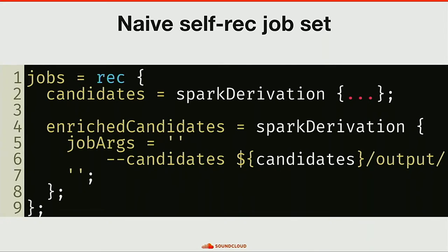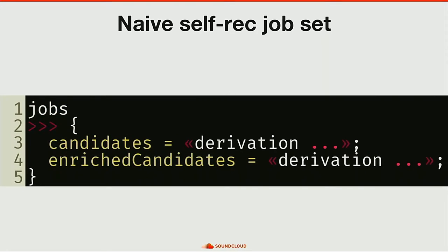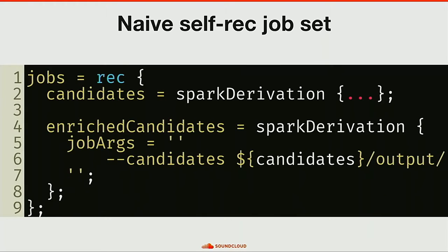To define all jobs together, I use a recursive set in Nix. I define my first derivation, candidates, by calling spark derivation, and then enrich candidate by also calling spark derivation — which can refer to candidates because it's a recursive set. When you refer to a derivation as a string, you get the output path of the derivation with an attached string context that marks the dependency, allowing Nix to know that enrich candidates depends on candidates. And that works — I get my full set of jobs: my pipeline.